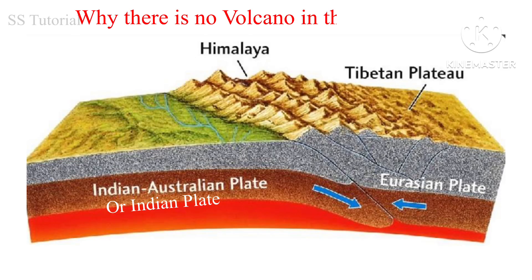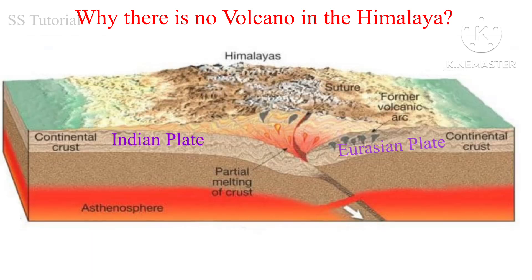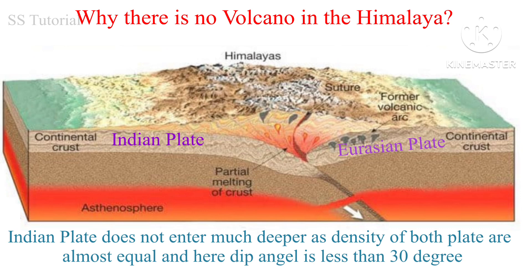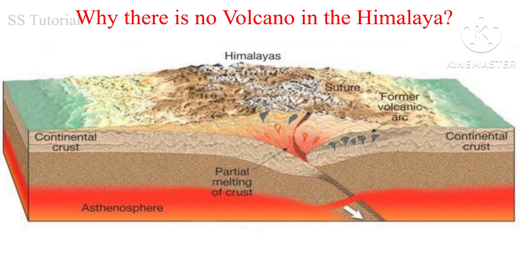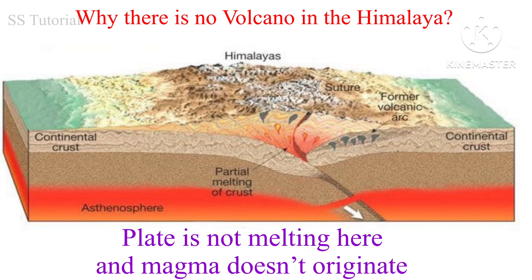Now let's understand why there is no volcano in the Himalaya. The Himalayas originated due to the collision of the Indian plate and the Eurasian plate — both continental plates in nature. This means the density of both plates is almost the same. That is why subduction does not take place here, the plate does not enter much deeper, and there are no water-saturated sediments.